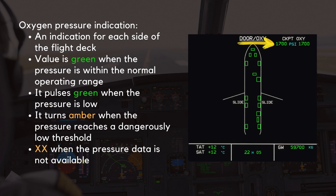Below this is the oxygen pressure indication, with an indication for each side of the flight deck. This value is green when the pressure is within the normal operating range, pulses green when the pressure is low, and turns amber when the pressure reaches a dangerously low threshold. These values vary for different aircraft variants, so please consult your FCOM for the appropriate figures. Two amber crosses will replace these values when the pressure data is not available.